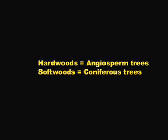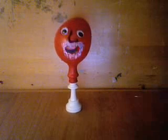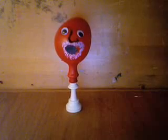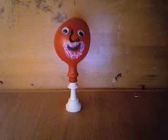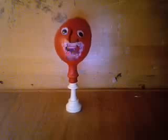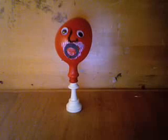Because coniferous trees appeared on Earth millions of years before angiosperms, the anatomy of softwood is more primitive and simple than the anatomy of hardwood. This simplicity, however, means that there are fewer differences to distinguish one softwood species from another. So beware! Let's begin with the hardwoods, which are easier and more obvious to identify.